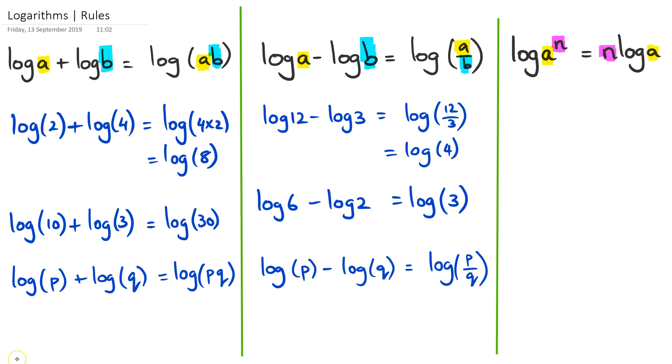All right, and so finally we go to the last example. If we have something like this, say for example we've got log of 4 to the power of 3, then all it is is we can rewrite this as 3 times log of 4.